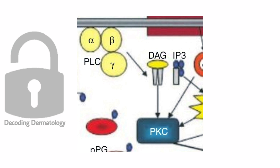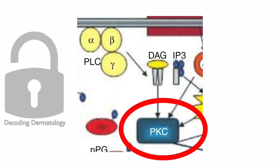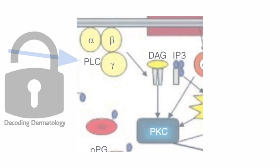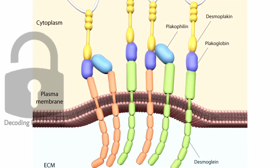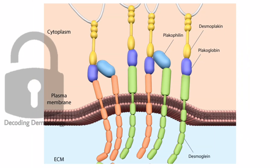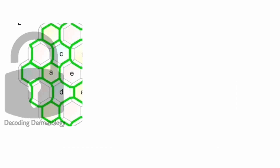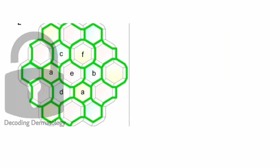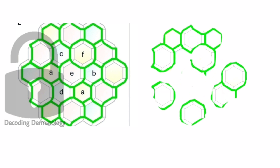Another mechanism is that the antibody activates phosphorylation of the cells by activating protein kinase C, with the help of phospholipase C and diacylglycerol. When cell phosphorylation occurs, it causes disruption of the attachment between plakoglobin and desmoglein.